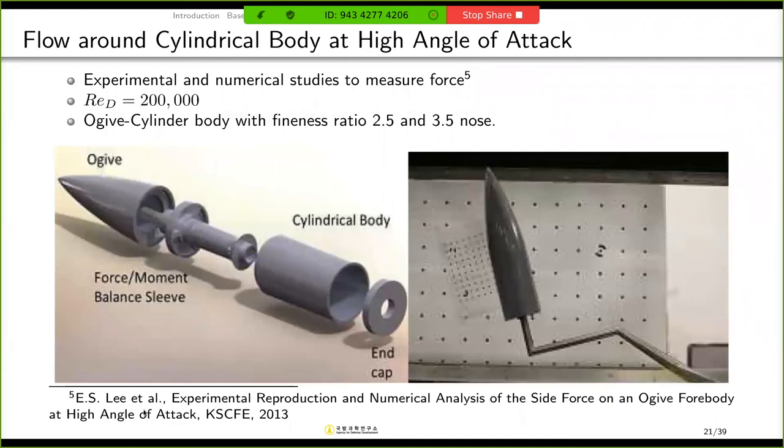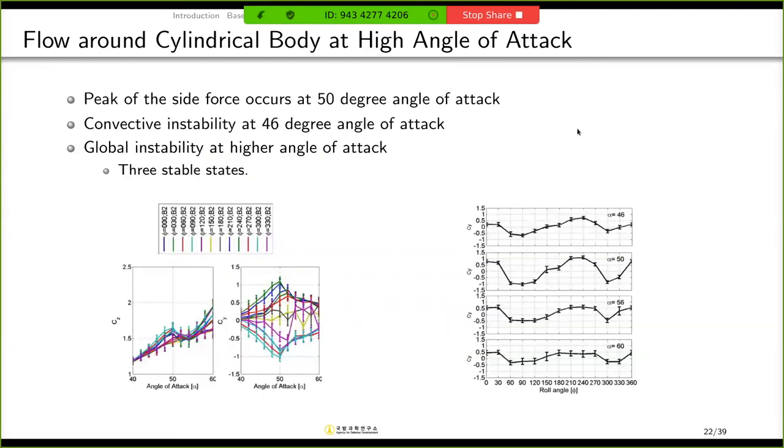One of our colleagues in ADD conducted some wind tunnel experiment. And this is his wind tunnel model. And it's very simple. It has ogive nose and body cylinder. And the fineness ratio of the ogive nose is 3.5.